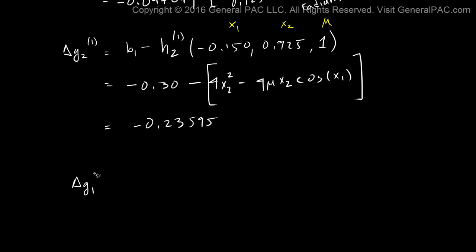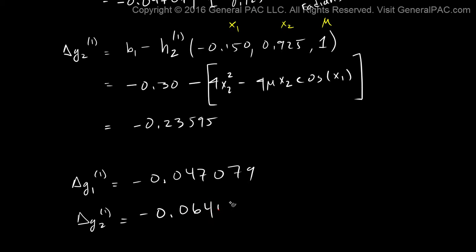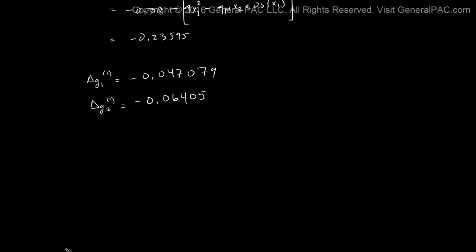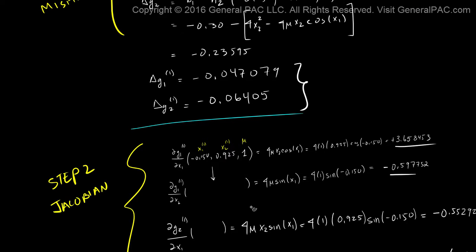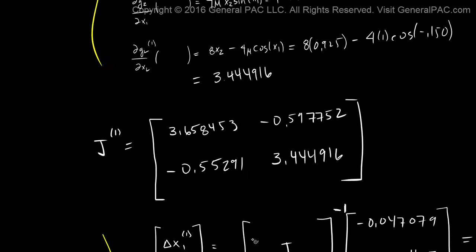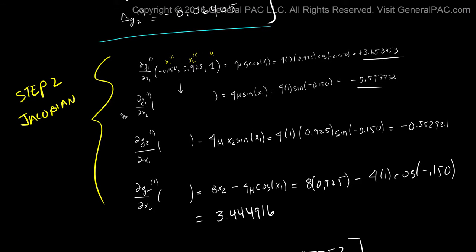So we have delta g1 for the second iteration equal to negative 0.047079, and delta g2 for the second iteration equal to negative 0.06405. At this point I took a small break, and when I resumed the recording was not captured. So in this last part of the video I'll go through the steps completed to finish the second iteration.